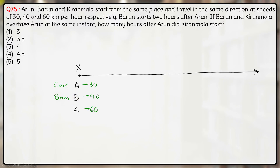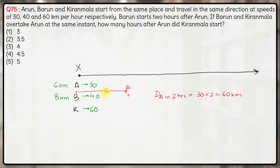In 2 hours, the distance travelled by Arun will be 30 × 2, that means 60 km. So by the time Barun starts, Arun would have reached some point, and this distance here will be 60 km.